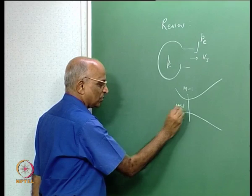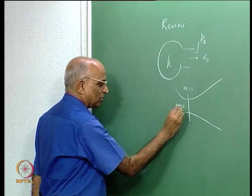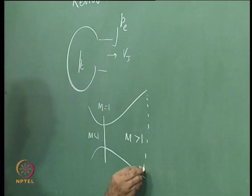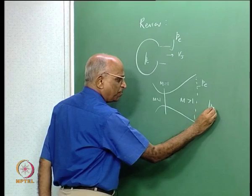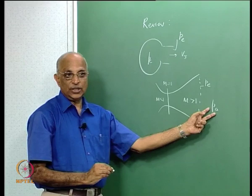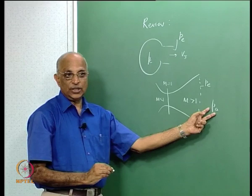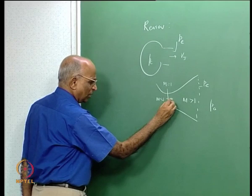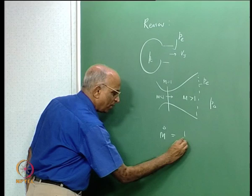In the convergent part the Mach number was less than 1; in the divergent part the Mach number was greater than 1. After having done this, we said at the exit I have exit pressure Pe, the ambient pressure is Pa, and if the exit pressure is not matched to the ambient pressure I could have something like shock diamonds. We also looked at the flow through the nozzle.